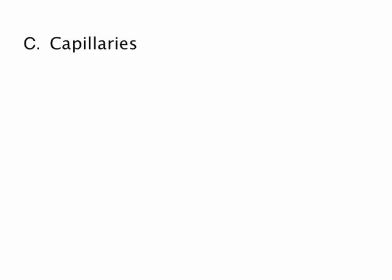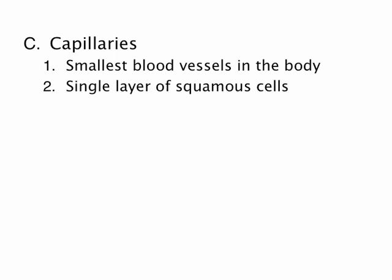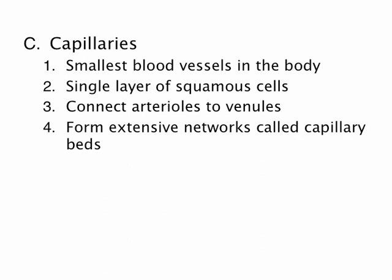Now we need to talk specifically about capillaries. Capillaries are the smallest blood vessels in the body. They are made up of a single layer of squamous cells — literally all you have at this level is the endothelial lining. Functionally, they connect arterioles to venules, which are small veins. They form extensive networks called capillary beds. This is where all gas exchange takes place — since the epithelium is simple squamous, or one cell layer thick, there is lots of opportunity for diffusion.